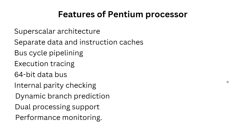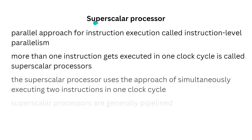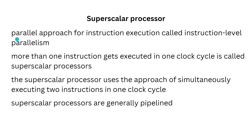As the Pentium processor is a superscalar processor, let's see what superscalar processors are. A special category of microprocessors that involves a parallel approach for instruction execution — called instruction level parallelism — through which more than one instruction gets executed in one clock cycle, is called superscalar processors. Unlike scalar processors that can execute at most one instruction per clock cycle, the superscalar processor simultaneously executes two instructions in one clock cycle. Superscalar processors perform this task by sending multiple instructions to various execution units at the same time, hence providing high throughput.